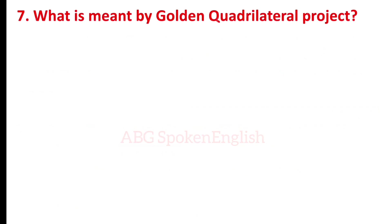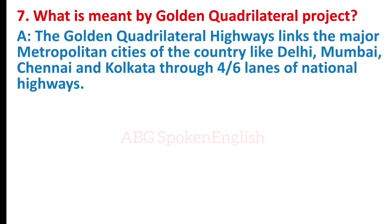What is meant by the Golden Corridor Project? The Golden Corridor highways link the major metropolitan cities of the country like Delhi, Mumbai, Chennai and Kolkata through 4 to 6 lanes of national highways.